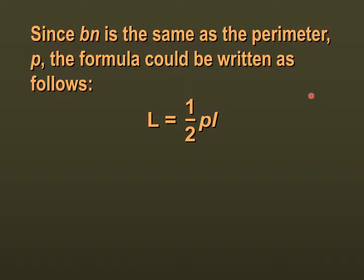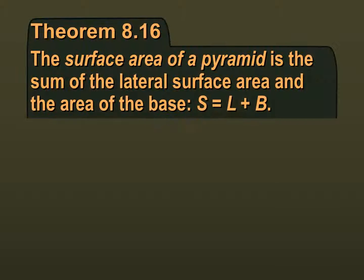So what is the difference between slant height and regular height? Regular height goes from the vertex straight to the bottom, whereas your slant height is the height that goes along the actual pyramid — it's slanted. So there's a difference between regular height, which is just up and down and perpendicular, versus slant height, which is slanted. That's what the little L stands for: your slant height. The total surface area of a pyramid is just equal to your lateral surface area plus B — just one B because there's one base.